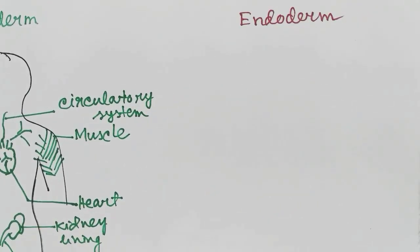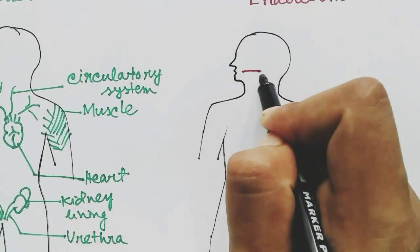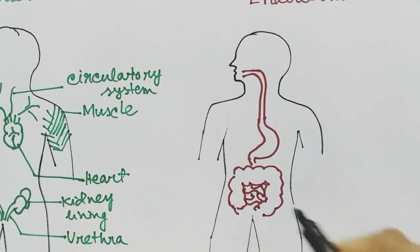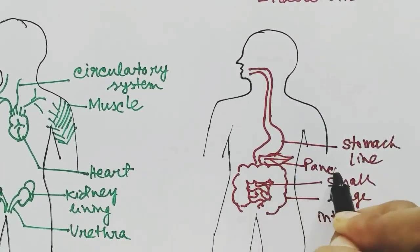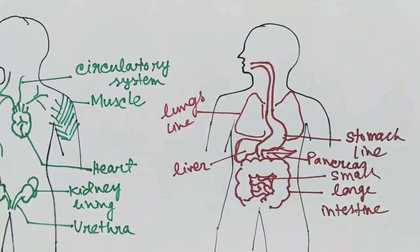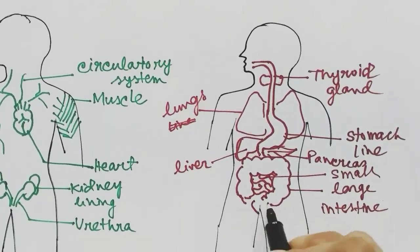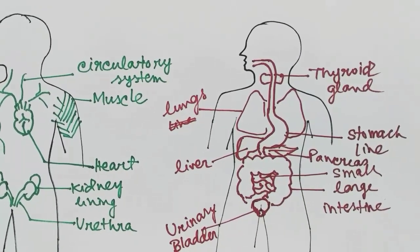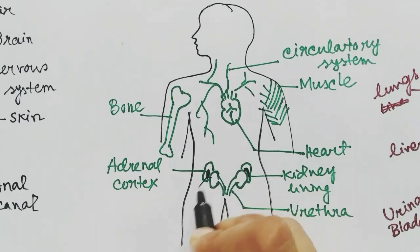The endoderm mainly contributes to the gastrointestinal tract and the organs that release digestive juices. The food pipe, the stomach, the small and large intestine, the pancreas, and the liver all contribute to digestion. The lungs lining, the thyroid and parathyroid glands, and the urinary bladder are also contributed by the endoderm. Note that in the lungs, mesoderm is also present, and in the adrenal gland, the medulla is formed by the ectoderm.